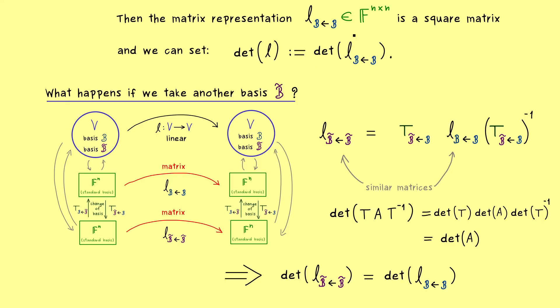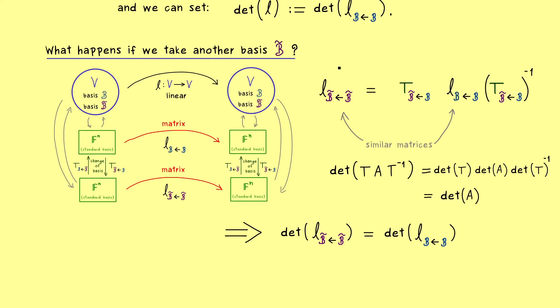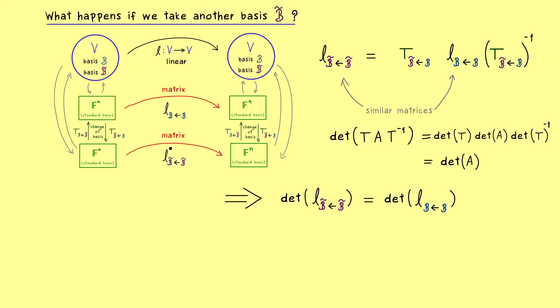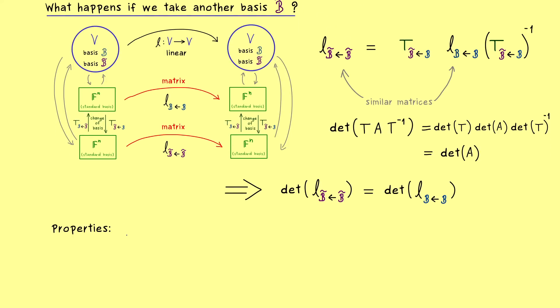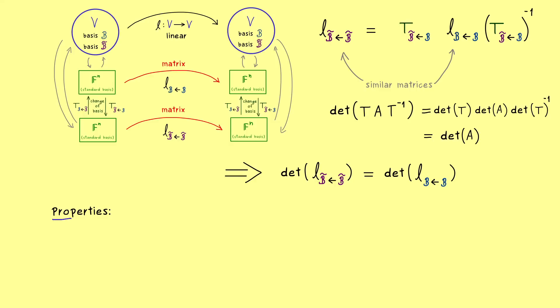Moreover, this also means that all the properties we have for the determinant of matrices, translate to the general determinant now. For example, we also have the multiplicative rule there.